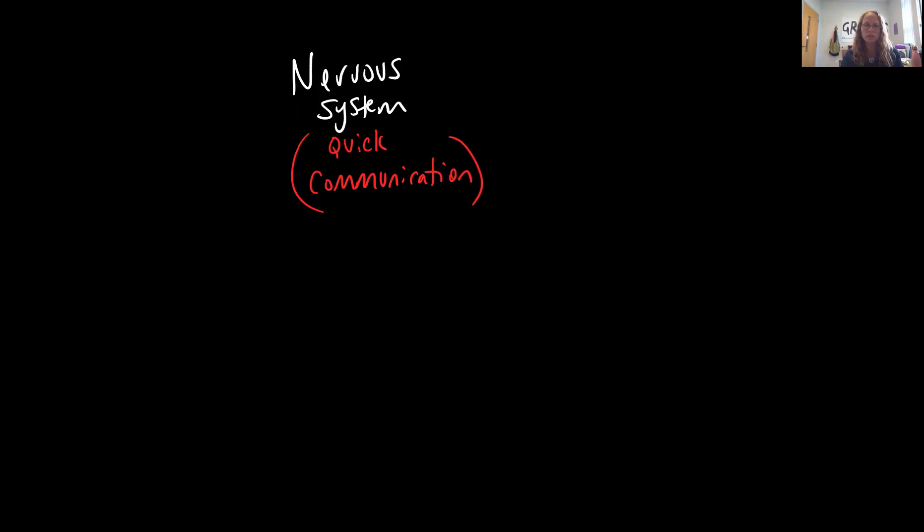Our nervous system, remember, is divided into the CNS or central nervous system that consists of the brain and the spinal cord. And really, you should think about this as the processing centers. So the brain and the spinal cord is where sensory information is processed and responses are generated from this part of the nervous system.